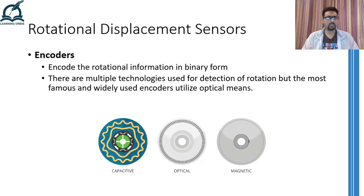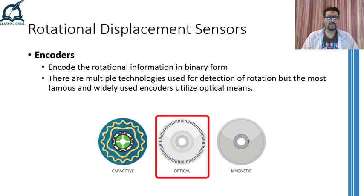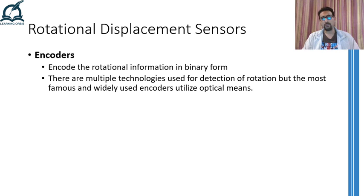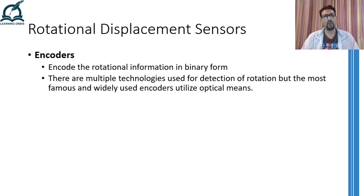There can be a number of ways to encode the rotational displacement information into a suitable binary representation, but I won't be discussing anything other than the optical way. The ease, reliability, and robustness of using optical encoders surpasses the advantages offered by any other technology. Therefore, optical encoders are the most used and preferred type of encoders in a range of applications. I am going to discuss two types of optical encoders that you can easily find in industries or any out-of-industry device.